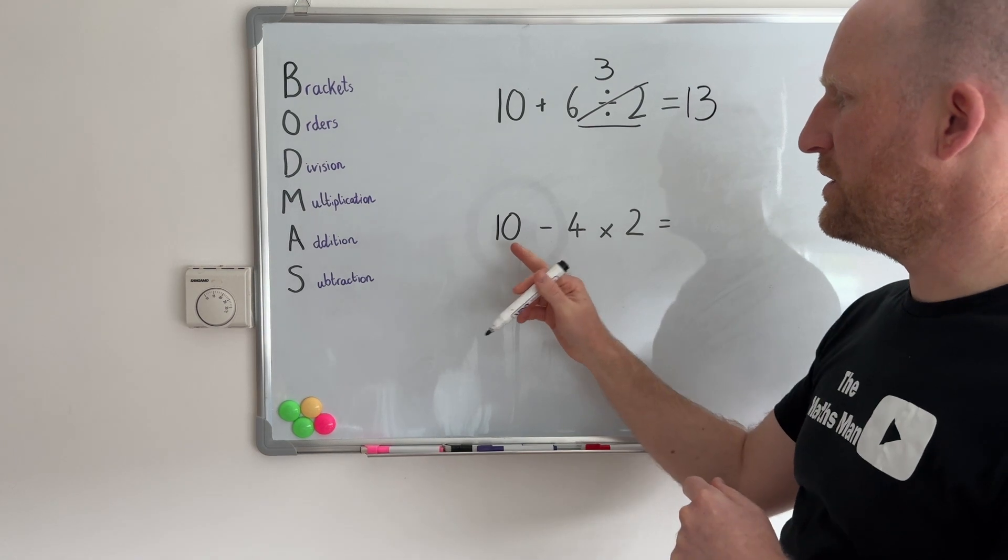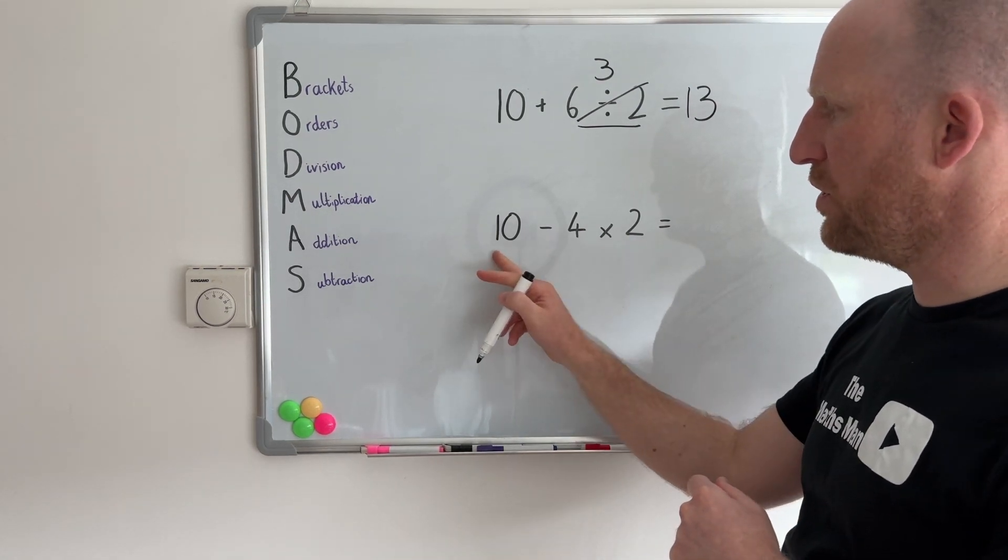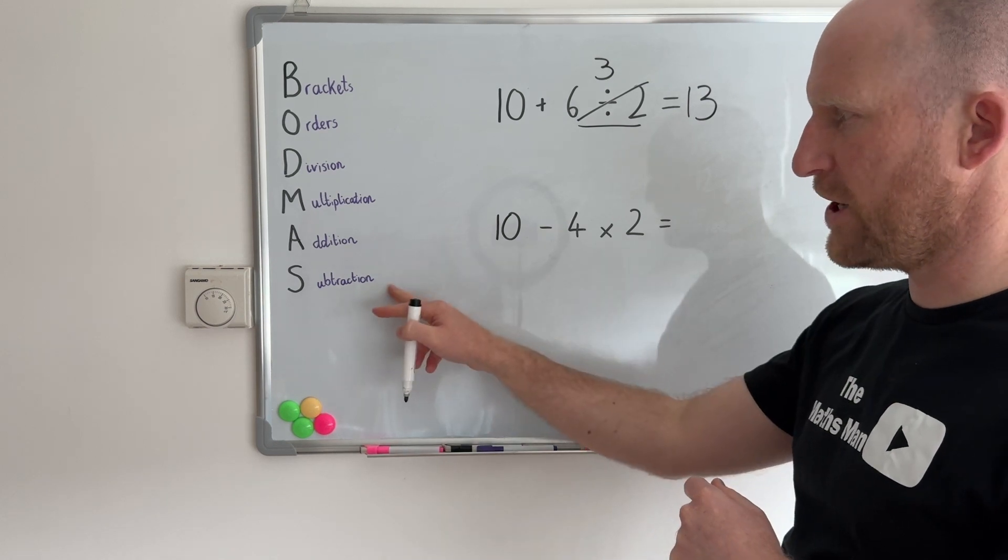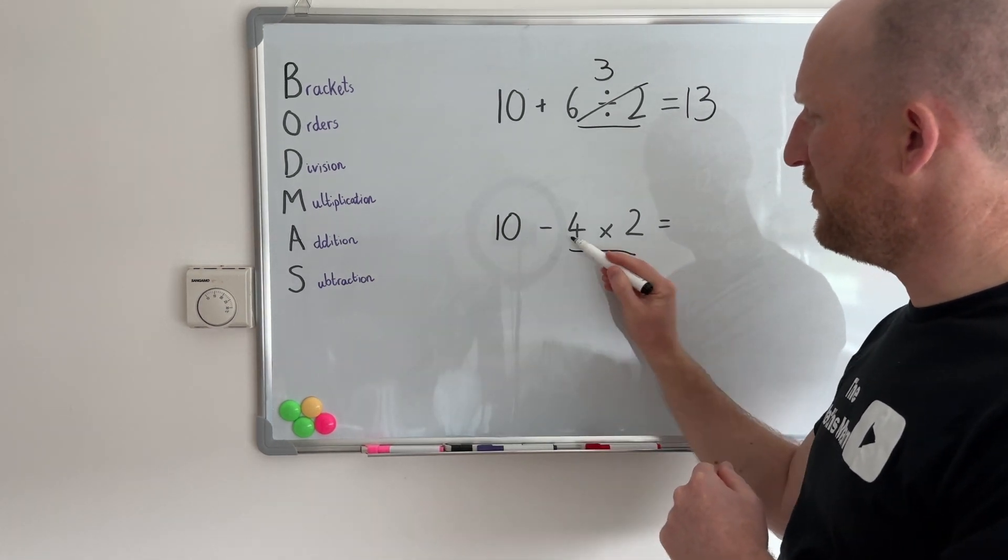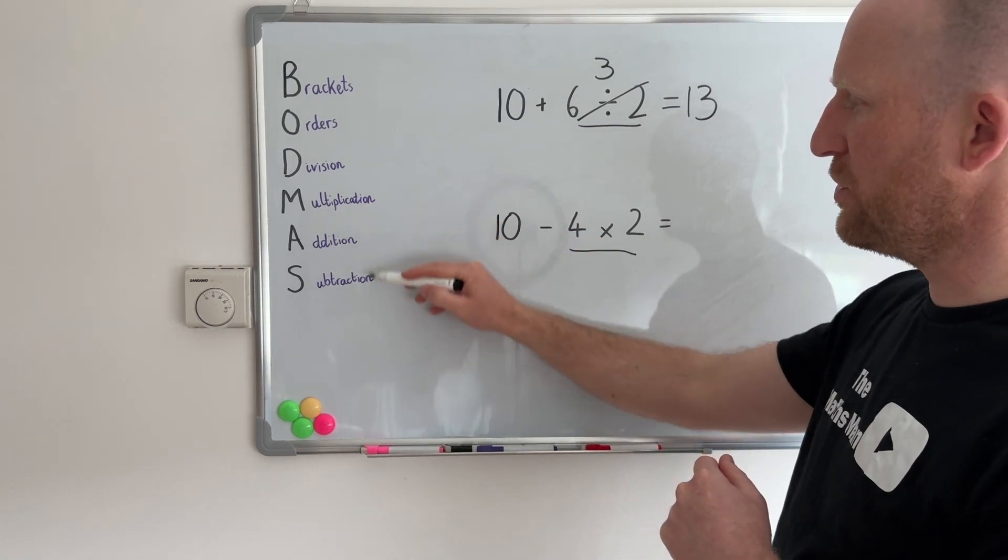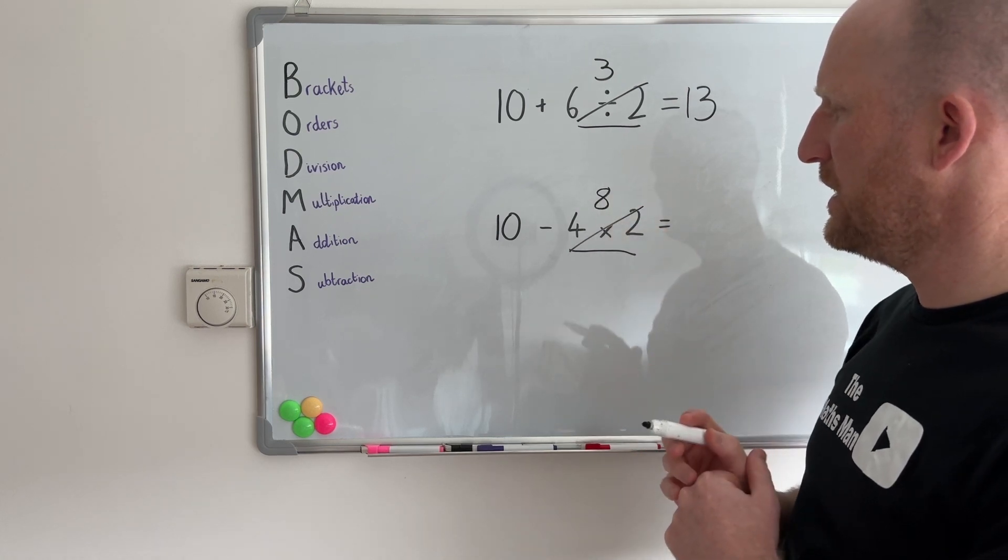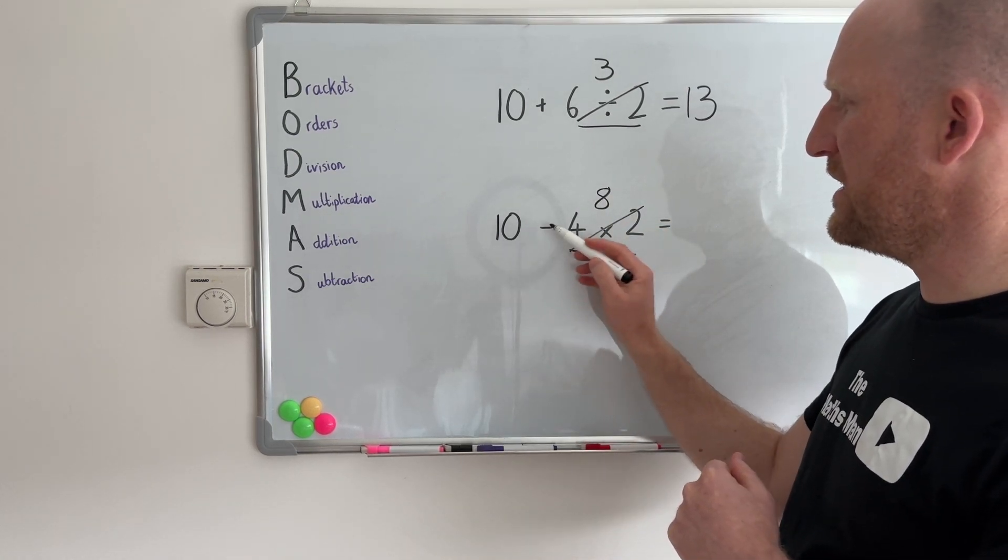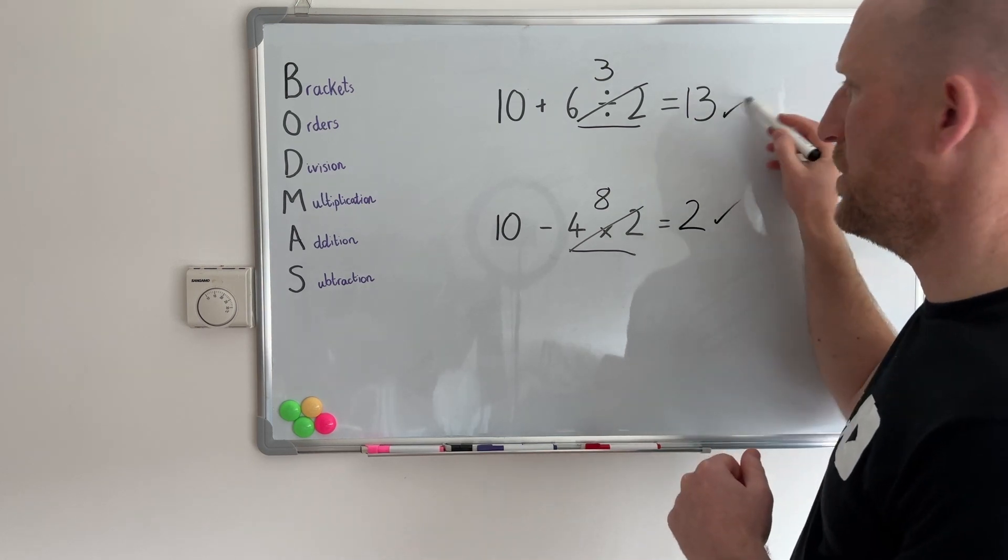Let's have a look at this question: 10 take away 4 multiplied by 2. So I do not do this part first because subtraction is last on the list. I do this bit first. So 4 times 2. So multiplication comes before subtraction. So 4 times 2 that gives me 8 and then I'm left with 10 take away 8 and that gives me 2.